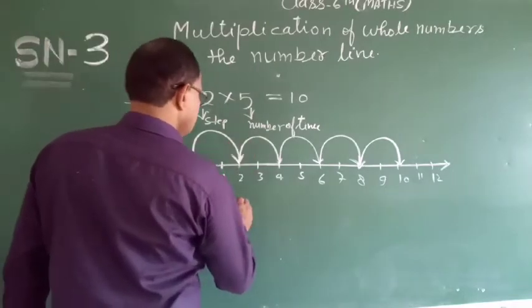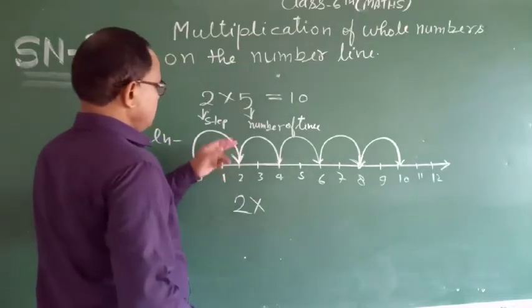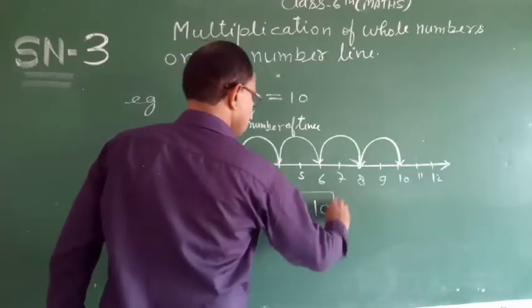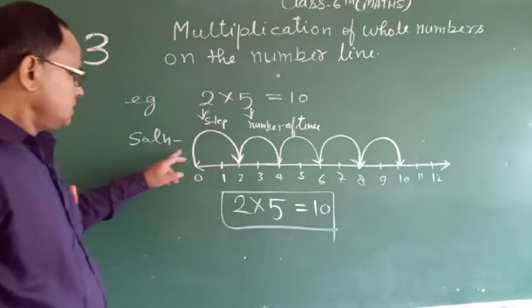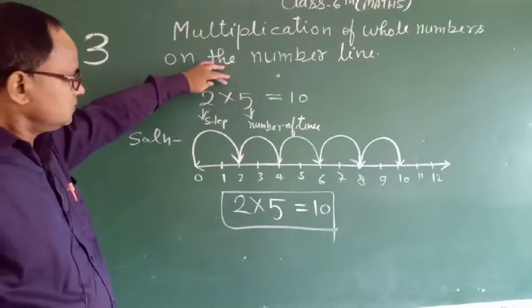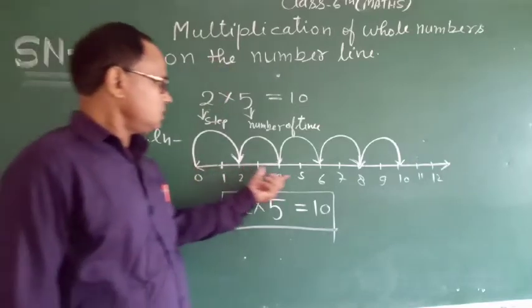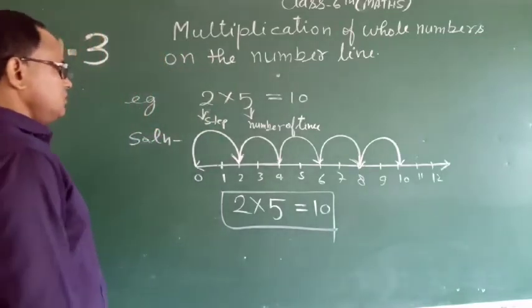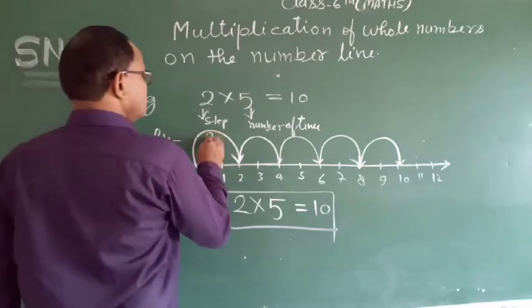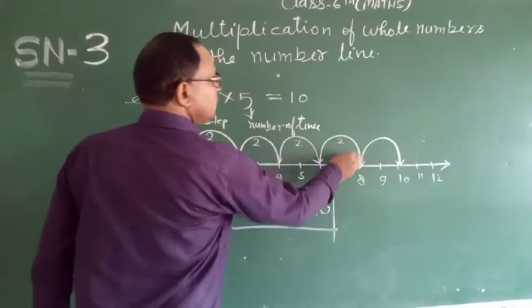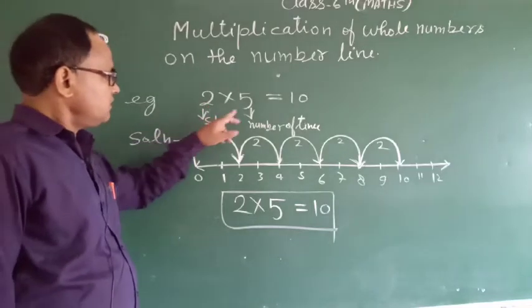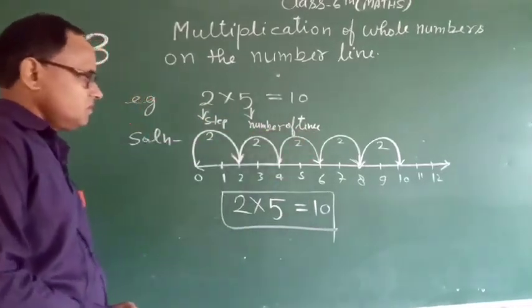Here we show step 2 and number of times 5, and we get 10. Thus the multiplication of two whole numbers is shown on the number line. Here, 2 is the step and 5 is the number of times.